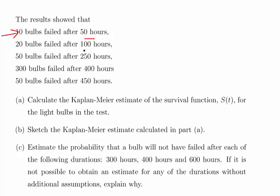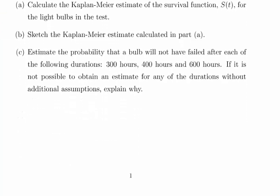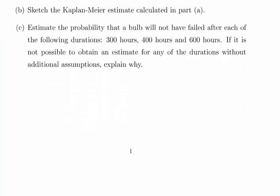Calculate the Kaplan-Meier estimate of the survival function S(t) for the light bulbs in this test, and sketch the Kaplan-Meier estimate — it's a step function, not a curve. Also estimate the probability that a bulb will not have failed after 300 hours, 400 hours, and 600 hours. If it's not possible to obtain an estimate for any of those durations without additional assumptions, please explain why.